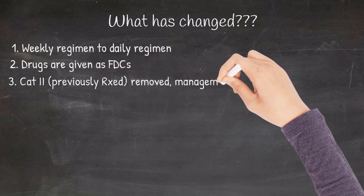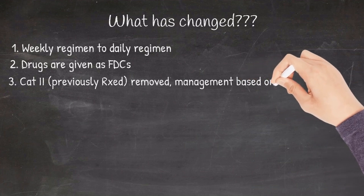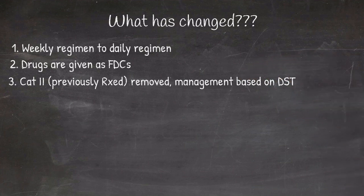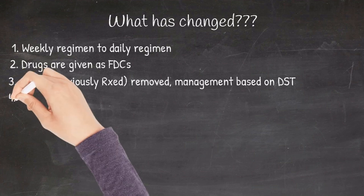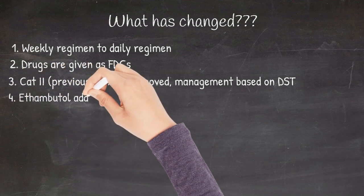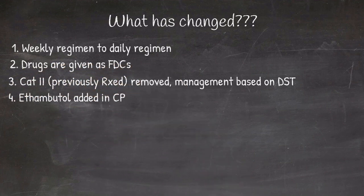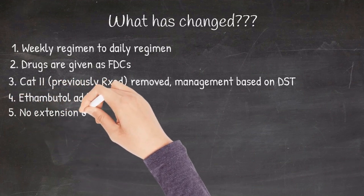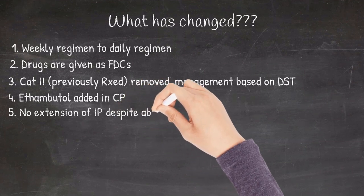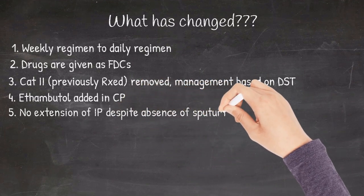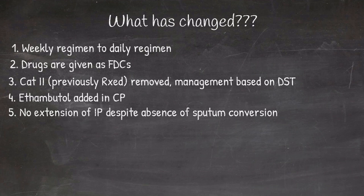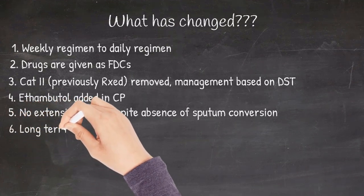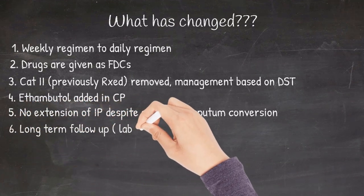You have two categories: drug-sensitive tuberculosis and drug-resistant tuberculosis. Ethambutol has been added in the continuation phase of management of drug-sensitive tuberculosis. There is no extension of intensive phase even in the absence of sputum conversion. In the latest update, follow-up period has been extended to two years, which includes both laboratory and clinical follow-up.